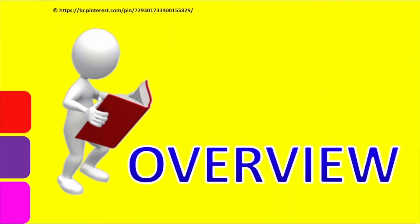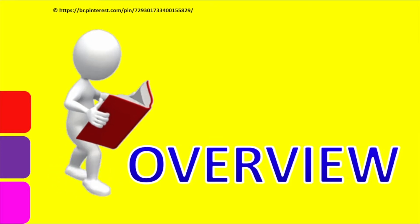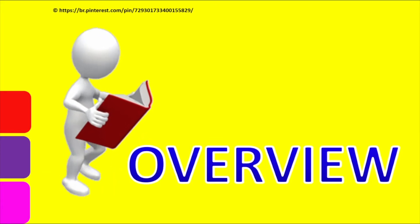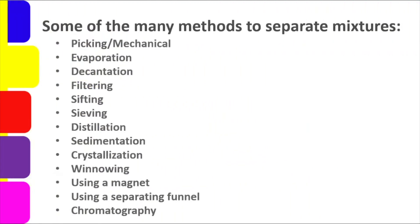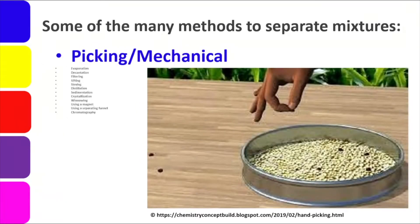We're going to do an overview of our discussion today. Before we break it down in detail, let's look at the big picture first. Since we'll be discussing separating mixtures using evaporation, let's first look at the full list of different methods of separating mixtures. The first is picking or mechanical separation, because we use a moving object — like our hands — to separate mixtures. This can be done with solid-to-solid or solid-to-liquid mixtures.